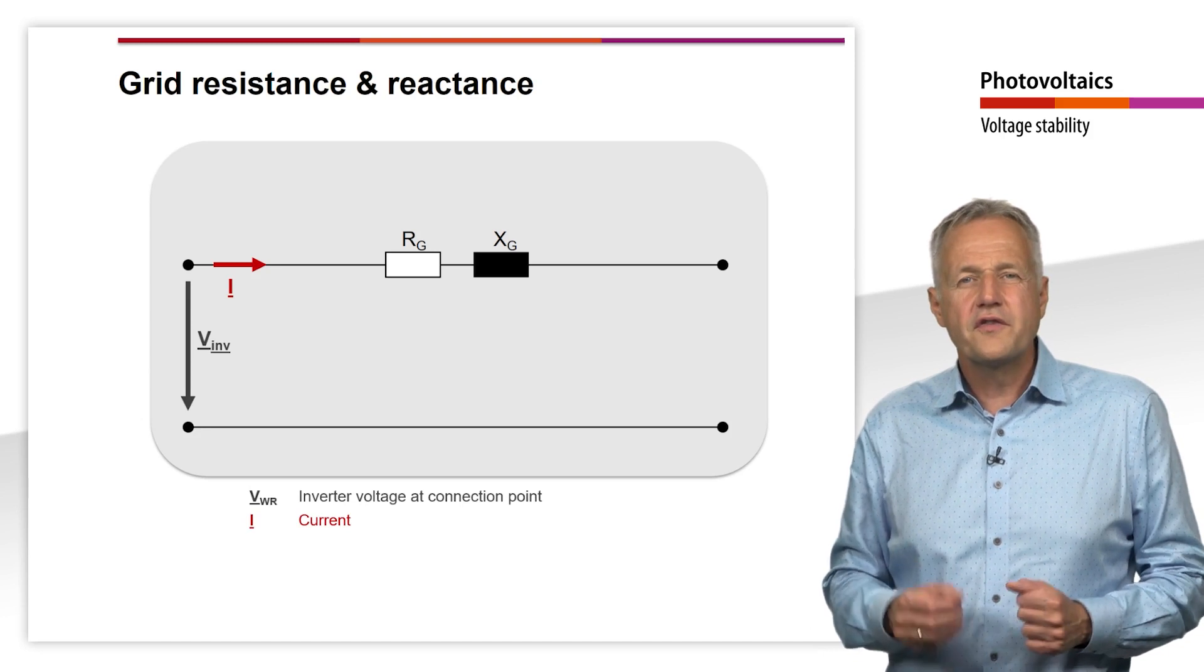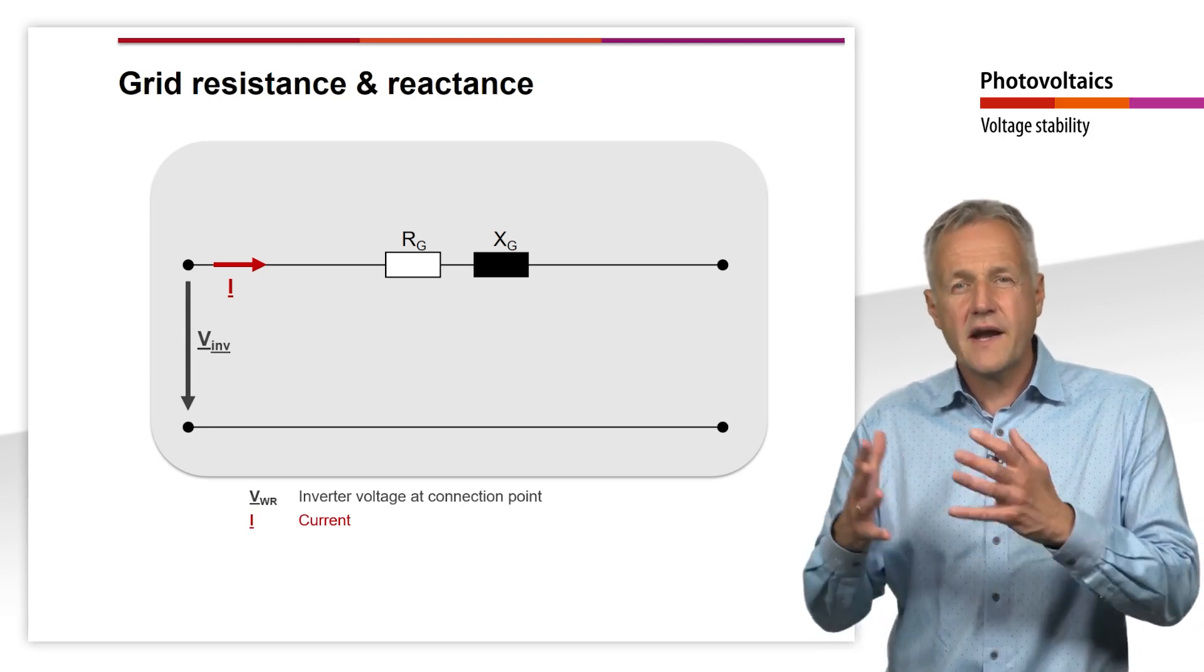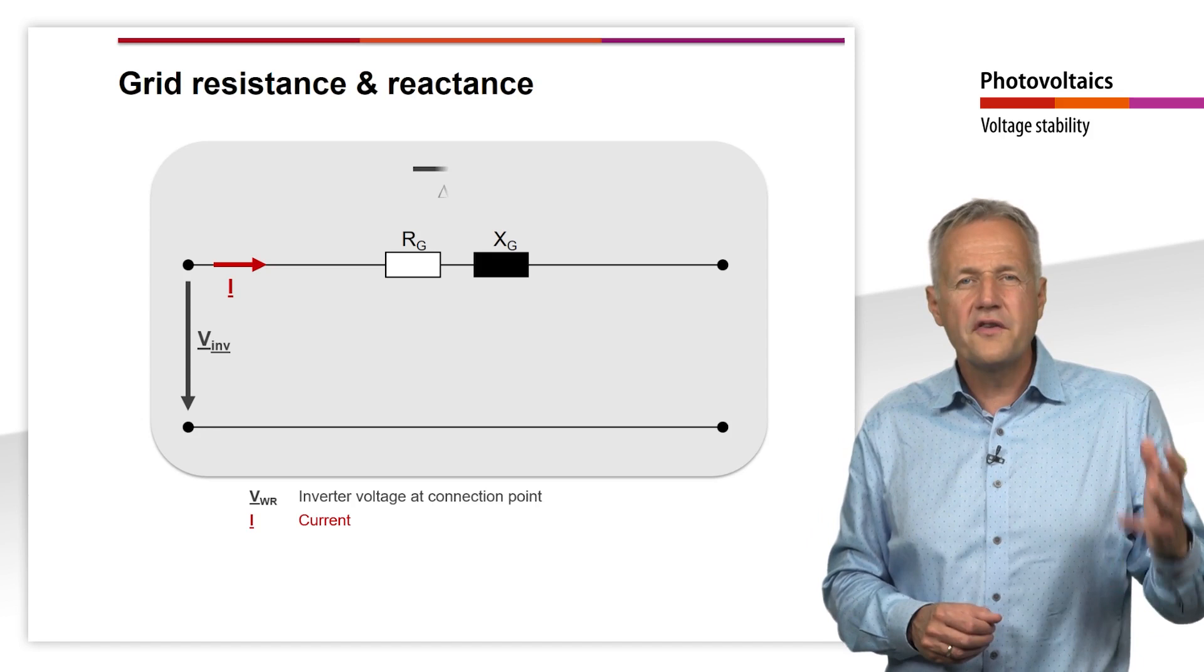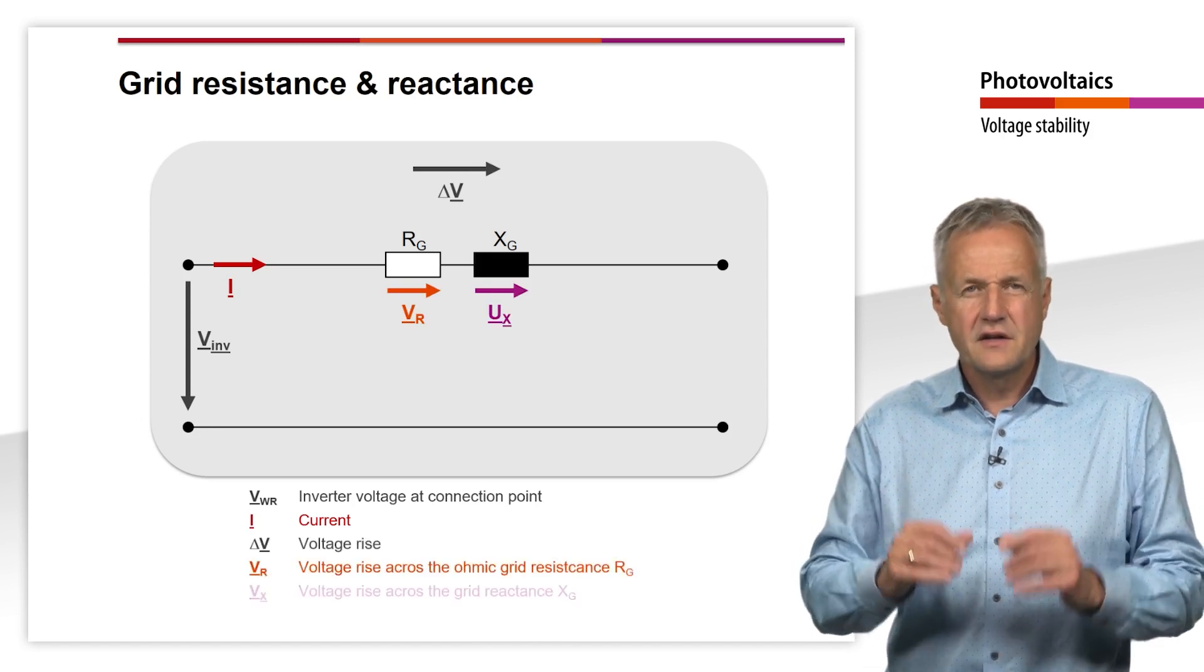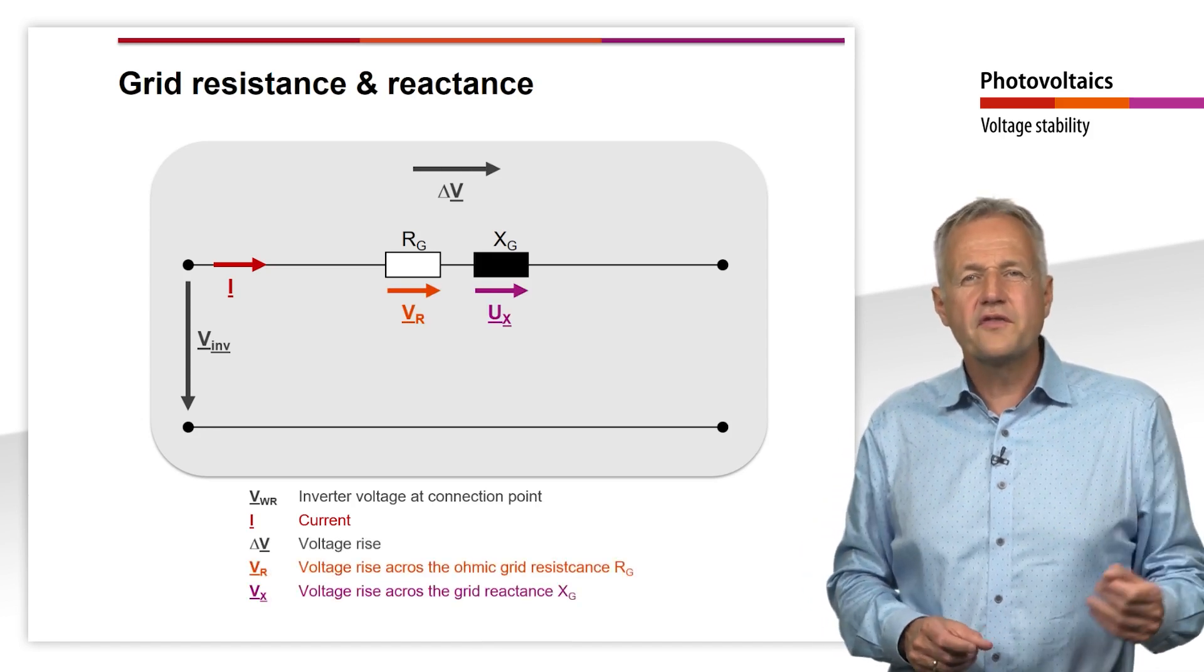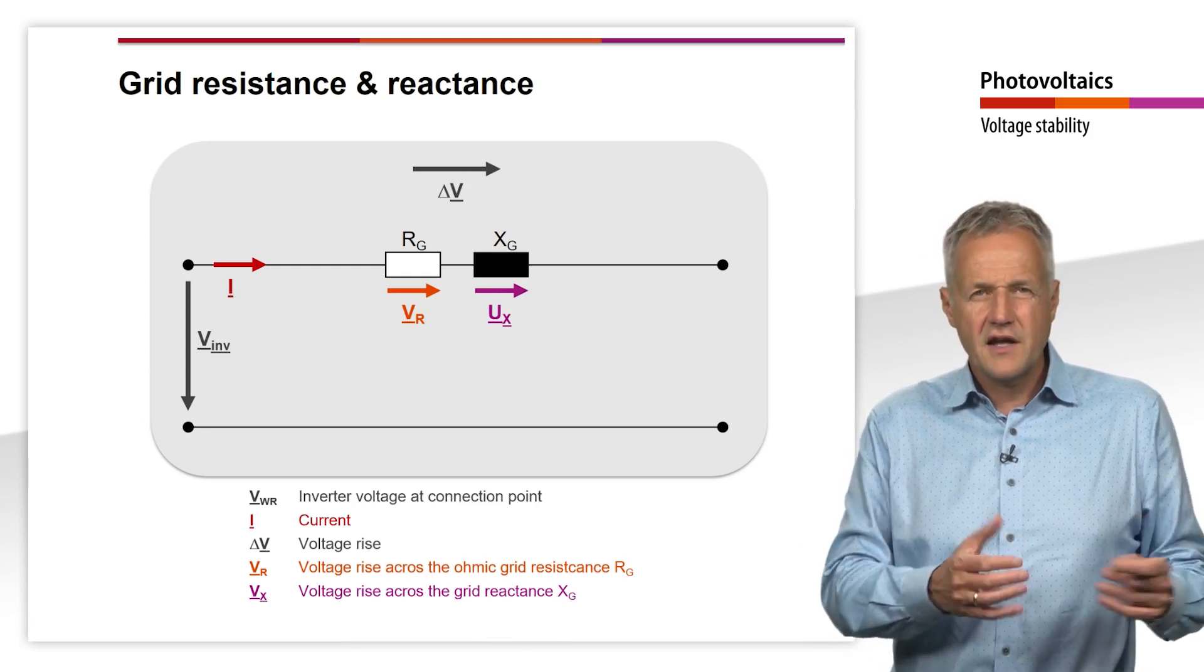From the point of view of the inverter, the resistance and the reactance of the grid cause a voltage drop delta V, which is composed of the voltage VR and VX.